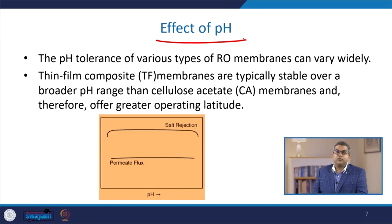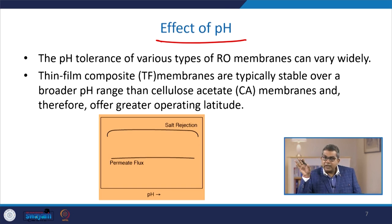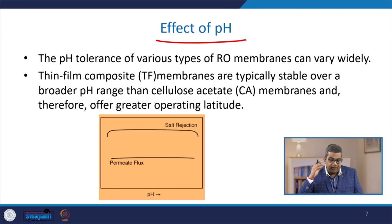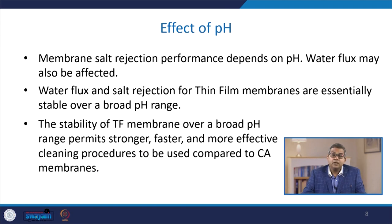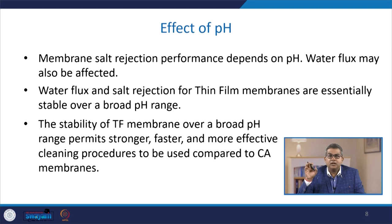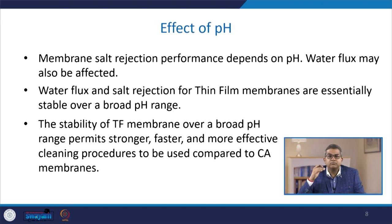Regarding the effect of pH, the pH tolerance of various types of reverse osmosis membranes can vary widely. Thin film composite membranes are typically stable over a broader pH range than cellulosic acetate (CA) membranes, therefore offering greater operating latitude. The membrane salt rejection performance depends on pH, and water flux may also be affected. The water flux and salt rejection for thin film membranes are essentially stable over a broad pH range. This stability permits stronger, faster, and more effective cleaning procedures compared to cellulosic acetate membranes.